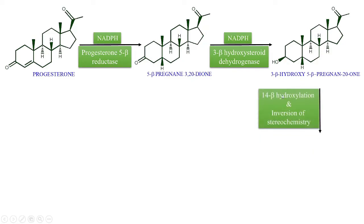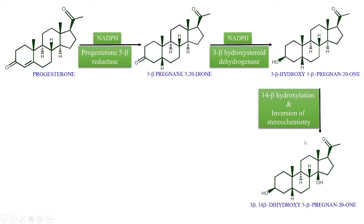Next is 14-beta hydroxylation and inversion of stereochemistry. We can see the hydrogen at position 14 is of alpha configuration — meaning it is behind the plane — and the new hydroxyl group is in front of the plane, indicating inversion of stereochemistry. Position 14 is hydroxylated, and the name of this compound is 3-beta,14-beta-dihydroxy-5-beta-pregnan-20-one.